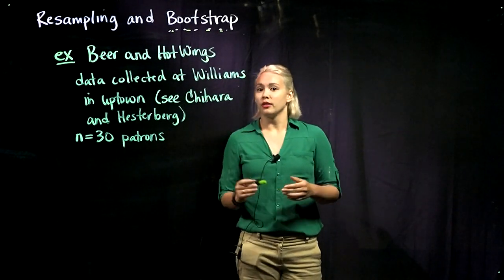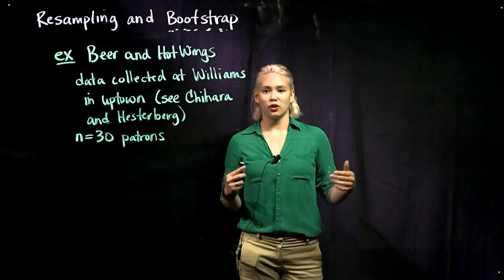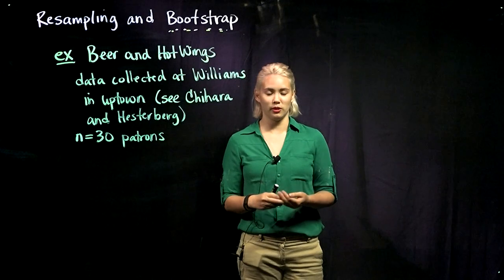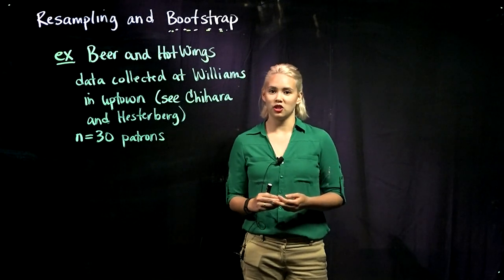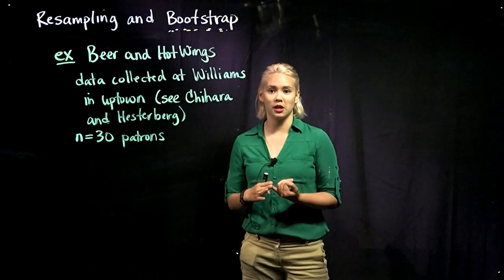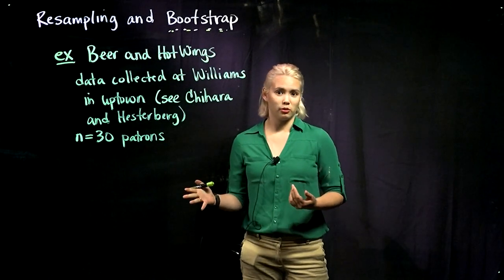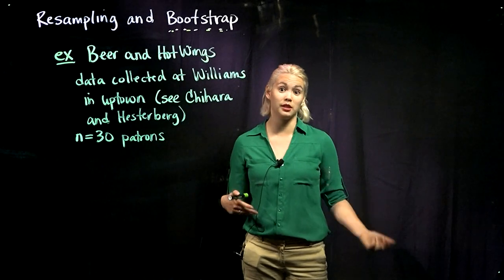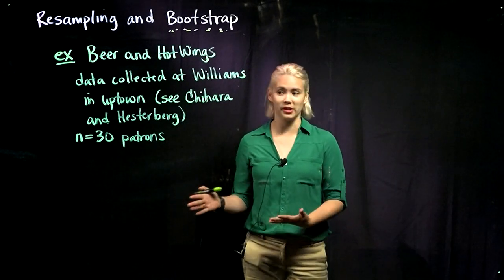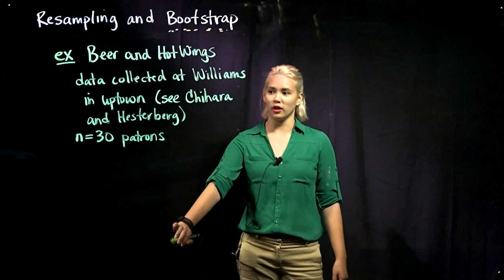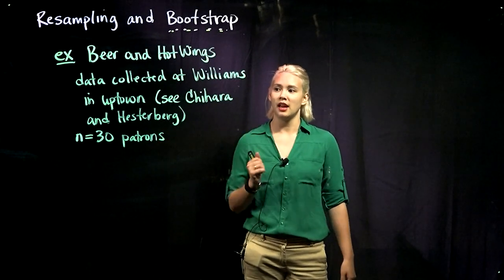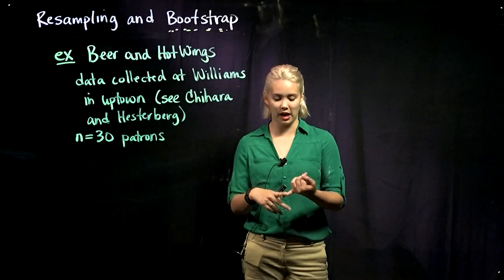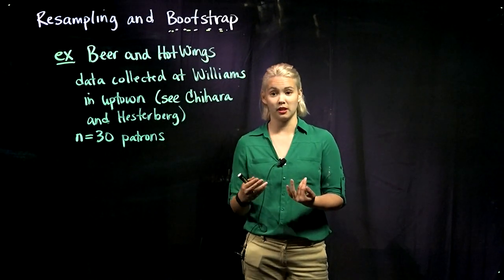In this example, we have beer and hot wings. At Williams Bar, they serve beer and hot wings, and this researcher was interested in the relationship between the number of beers consumed and the number of hot wings consumed. The researcher was thinking that perhaps people who consume more hot wings are also going to consume more beer. What this researcher did was go to Williams and ask 30 patrons to keep track of how many hot wings they consumed and how many beers they consumed.